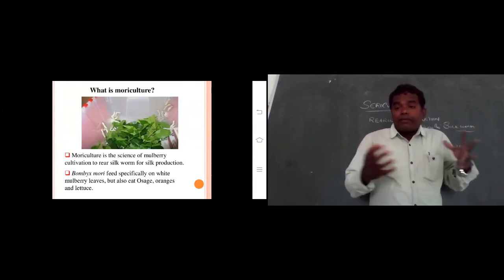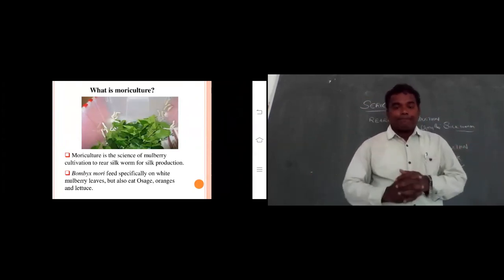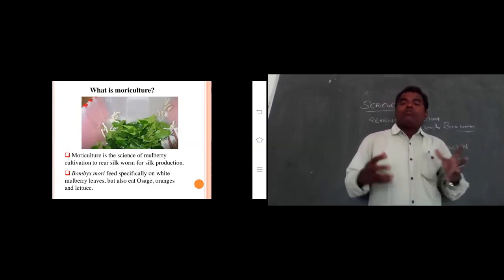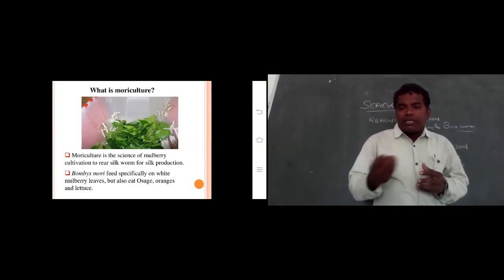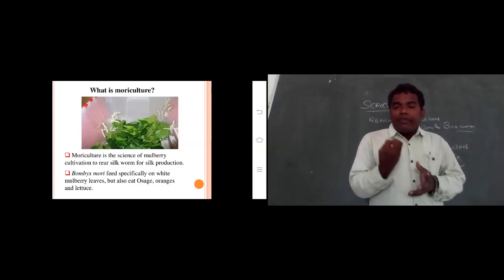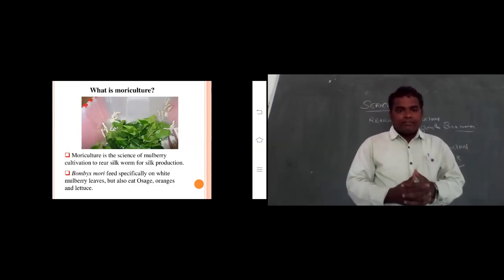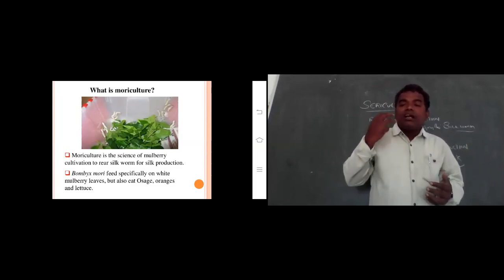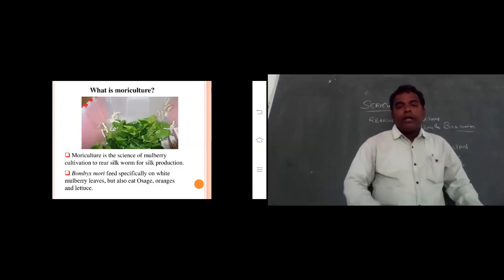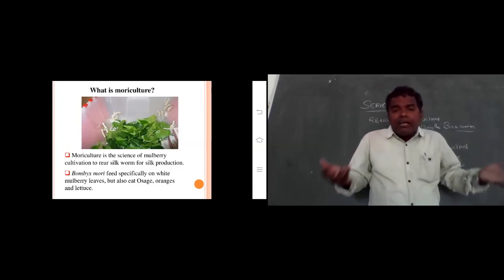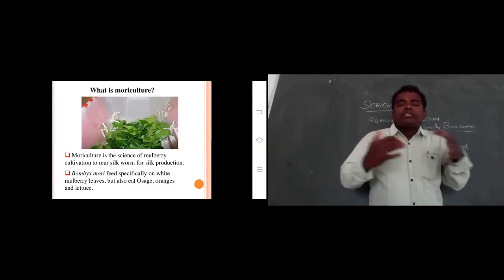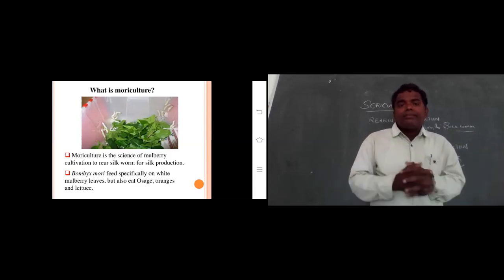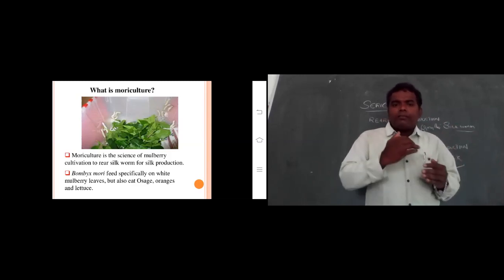What is moriculture? The silkworm at the larval stage must eat food — that food is mulberry leaves. Moriculture is the science of mulberry cultivation to rear silkworms for silk production. So rearing and production of mulberry leaves for the feeding of silkworms is called moriculture.